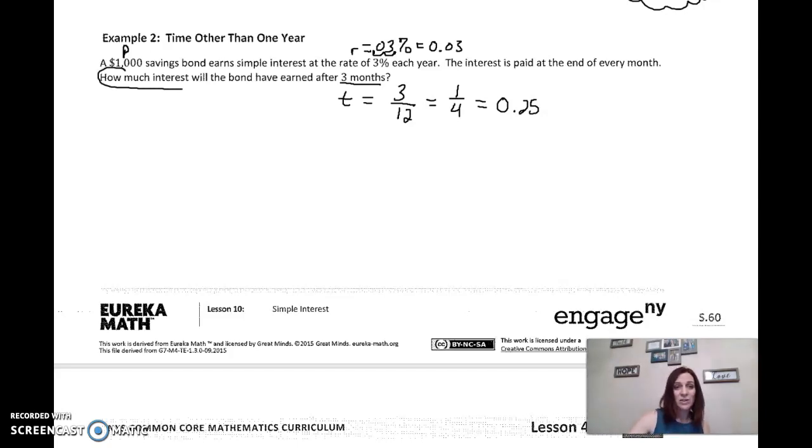Now you can reduce this to one fourth because three goes into itself one time, three goes into 12 four times. Or you can go three divided by 12 or one divided by four and you get 0.25. Okay. Totally okay to use a decimal. How much interest? So I'm not interested in the balance. I'm interested in the interest.